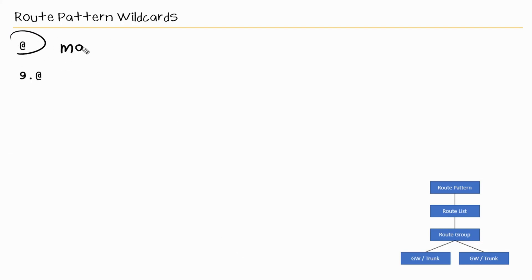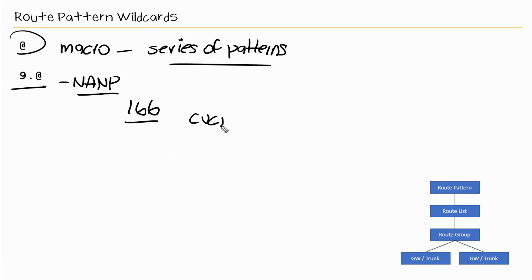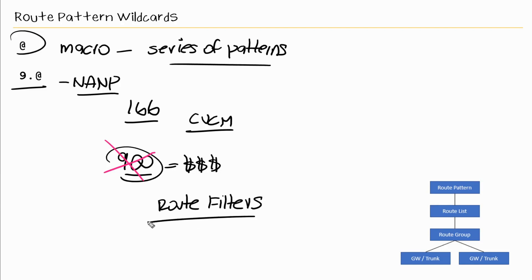Next we have the at sign (@), which is a macro that includes a series of patterns representing the numbering plan for an entire country. For example, 9.@ is the North American numbering plan, and it includes 166 individual route patterns added to the CUCM database. The drawback is that it also includes 900 numbers, which cost money per minute, and typically we don't want users dialing those. So we have to create route filters to restrict that calling when we use 9.@.